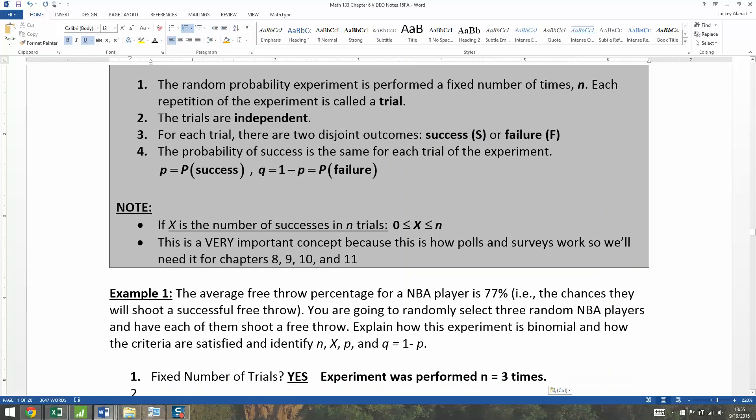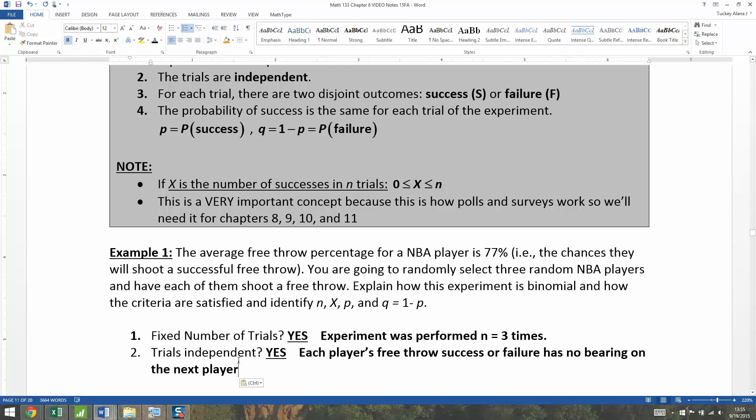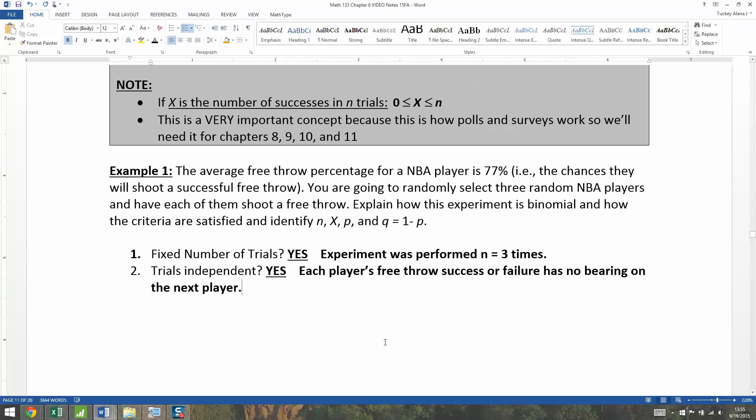The next one: were the trials independent of each other? Well yes, because each player doesn't have any effect on the next player's throw. Whether one player succeeds has no bearing on the next player. And I'll give you a little hint about NBA players—it didn't have to be three separate players. In general, they've tracked it. Most NBA players are independent from one throw to the next because they just have their percentage. If an NBA player shoots at 80%, then that player is going to shoot at 80%, and it doesn't really change that much depending on the situation.